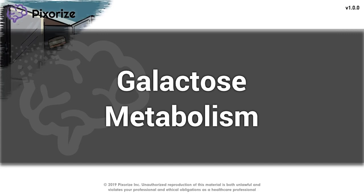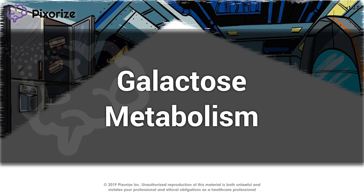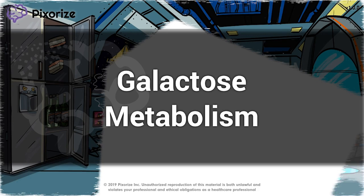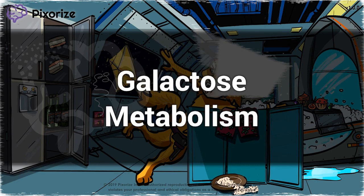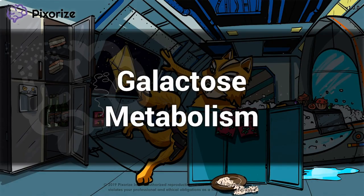Galactose metabolism involves a set of reactions used by the body to break down galactose. Galactose is a simple sugar primarily found in dairy products including breast milk and many other foods. Defects in this pathway can result in several diseases including galactokinase deficiency and galactosemia. In this video, we're going to be exploring the final frontier to learn more about galactose metabolism. Let's get started.